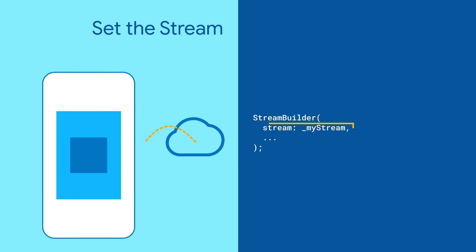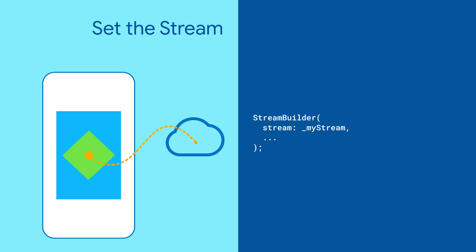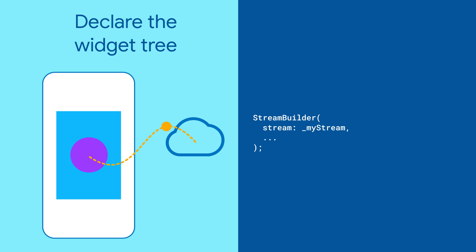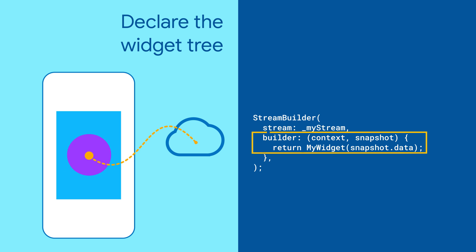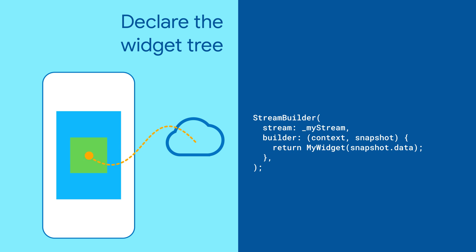Start by giving StreamBuilder a stream — just plug it in. Then write the builder. Given a snapshot, declare what should this part of your app look like.